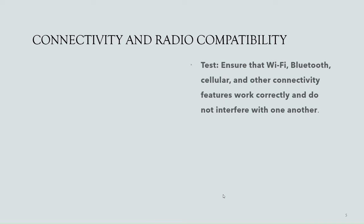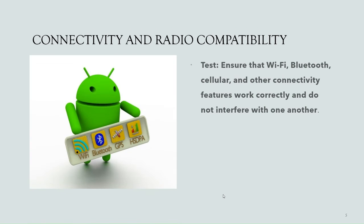Next, we'll see connectivity and radio compatibility. This category includes test cases which ensure Wi-Fi, Bluetooth, cellular, and other connectivity features work correctly and do not interfere with one another — for example, when turning on Wi-Fi, Bluetooth or cellular data getting cut off. All such misconnections or incompatibilities are included. If connectivity issues, signal drops, or interference occur, the manufacturer may release updates to improve the compatibility of wireless radios and connectivity components.